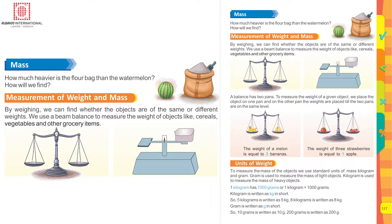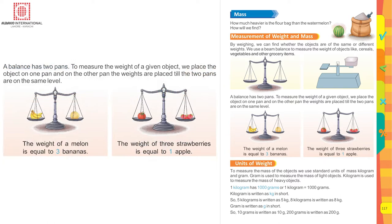By weighing, we can find whether objects are of the same or different weights. We use a beam balance to measure the weight of objects like cereals, vegetables, and other grocery items. A balance has two pans. To measure the weight of a given object, we place the object on one pan.